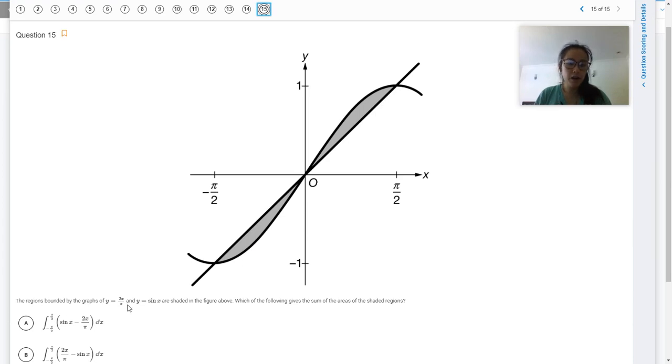So the regions bounded by the graphs of y equals 2x over pi and y equals sine of x are shaded in the figure above. Which of the following gives the sum of the areas of the shaded regions?